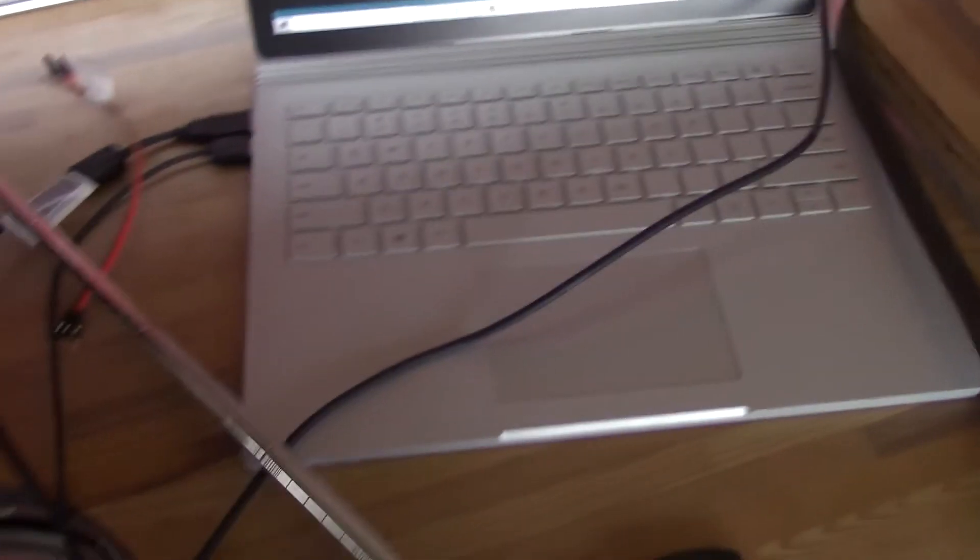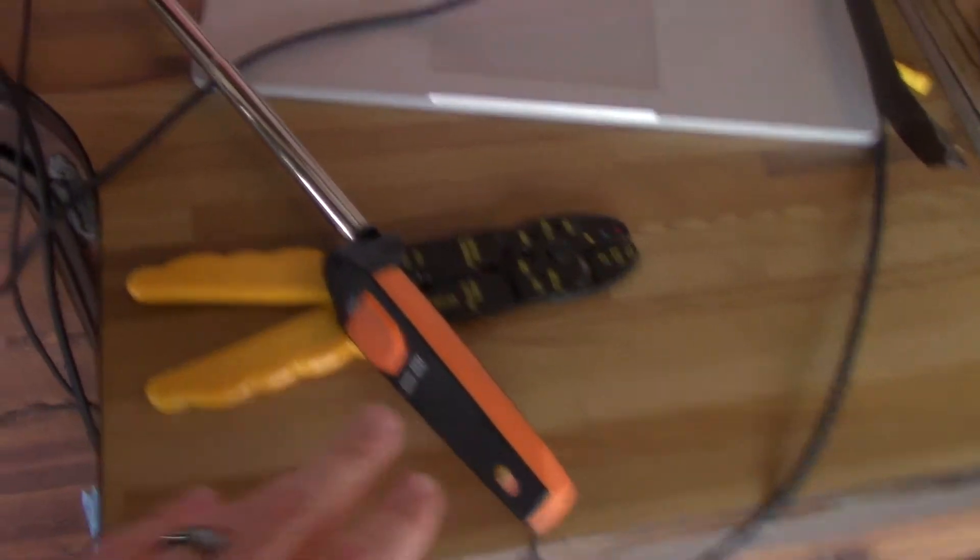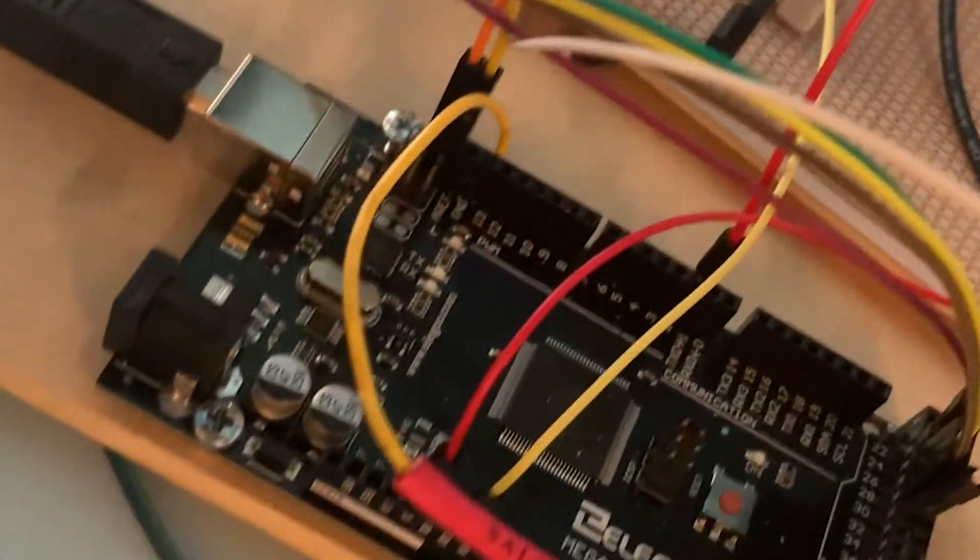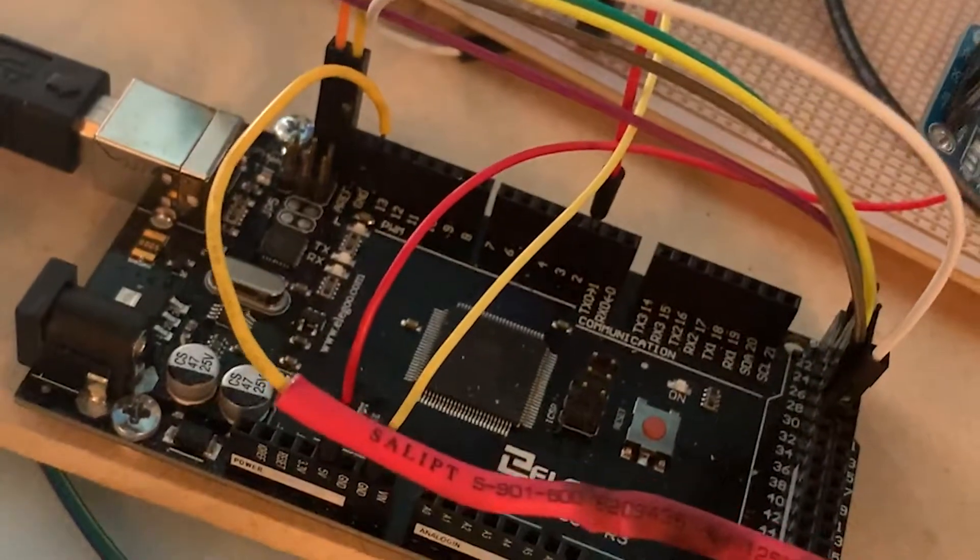Ours does have a front, so that yaw system will basically take information from a little fin that's attached to it to figure out the wind direction, and then it'll send that information to the Arduino to say, hey, adjust it in this direction. That's pretty much what the yaw system does.